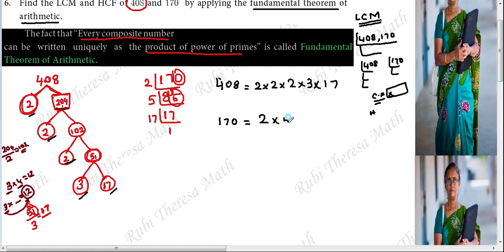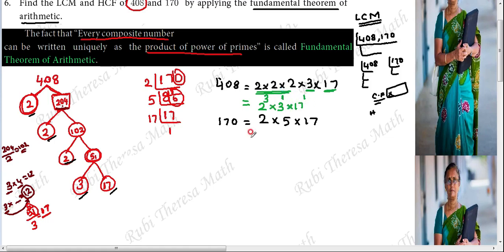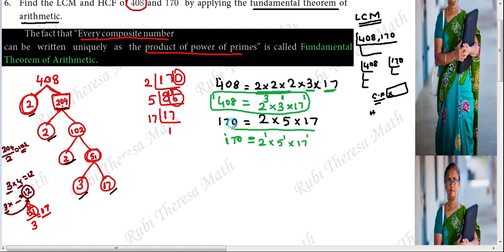170 equals 2 × 5 × 17. We can represent this in power formula — that is the product of power of primes. So 408 equals 2 power 3 into 3 power 1 into 17 power 1. And 170 equals 2 power 1 into 5 power 1 into 17 power 1.